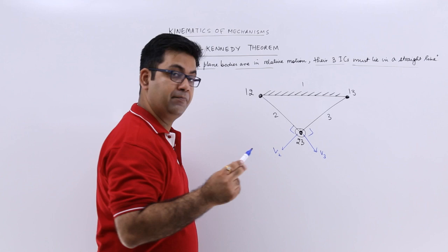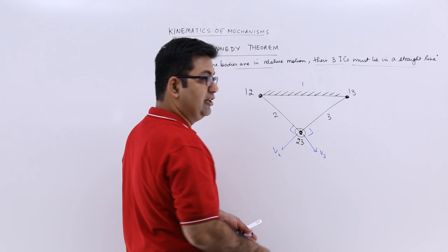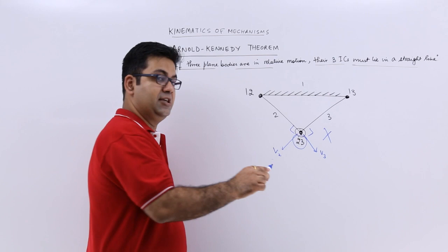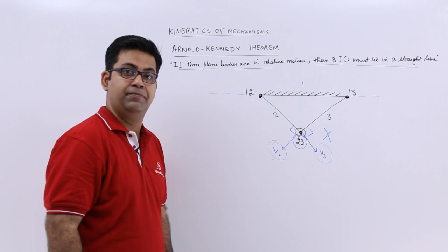Now, the point is the same, but it has two different velocities, which is not possible. A single point cannot have two different velocities. So this configuration is incorrect for the instantaneous center. This means that this instantaneous center will lie on the line which joins 1-2 and 1-3 in order to have v2 equal to v3. Then only you can have these two velocities equal.